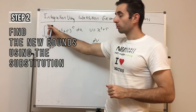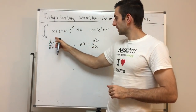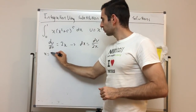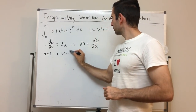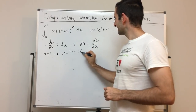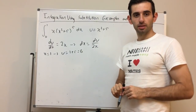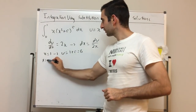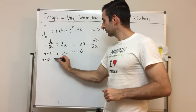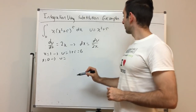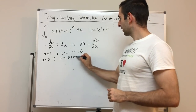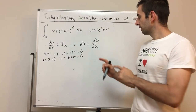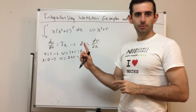Step two — we have bounds, so we need to transform them to match the substitution. If x = 1, then u = 1² + 5 = 6. And when x = 0, u = 0 + 5 = 5.